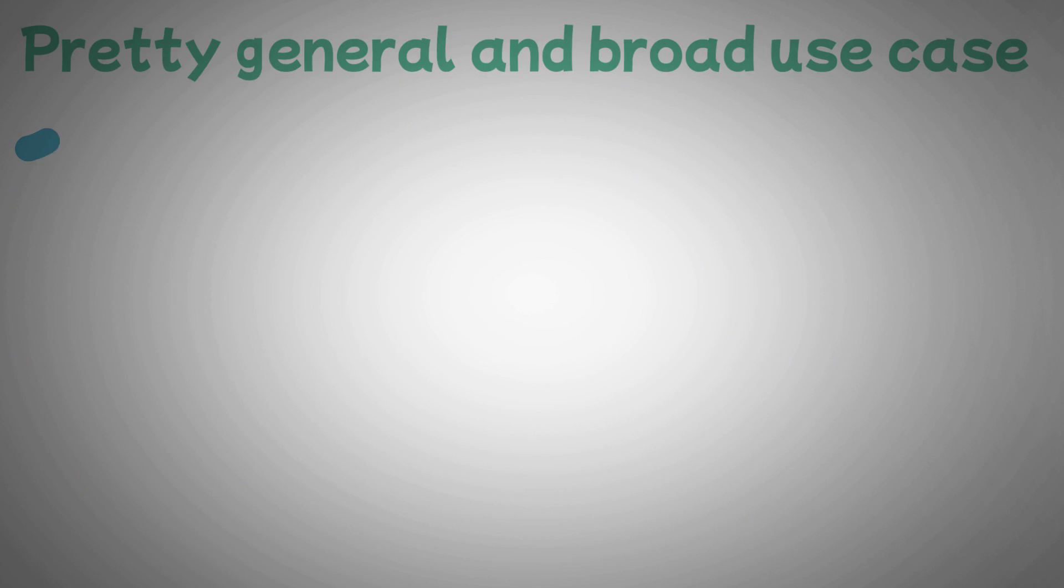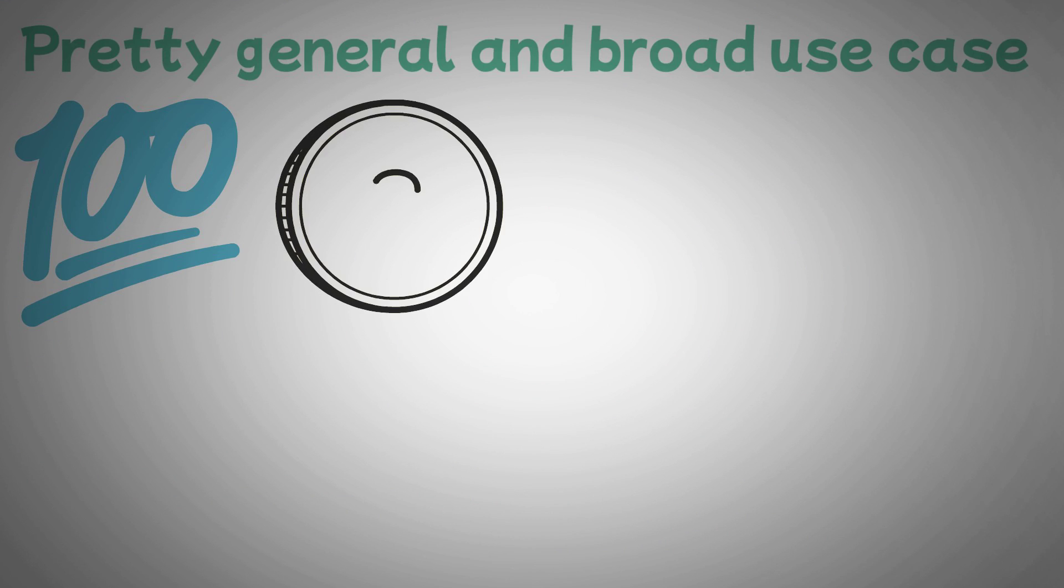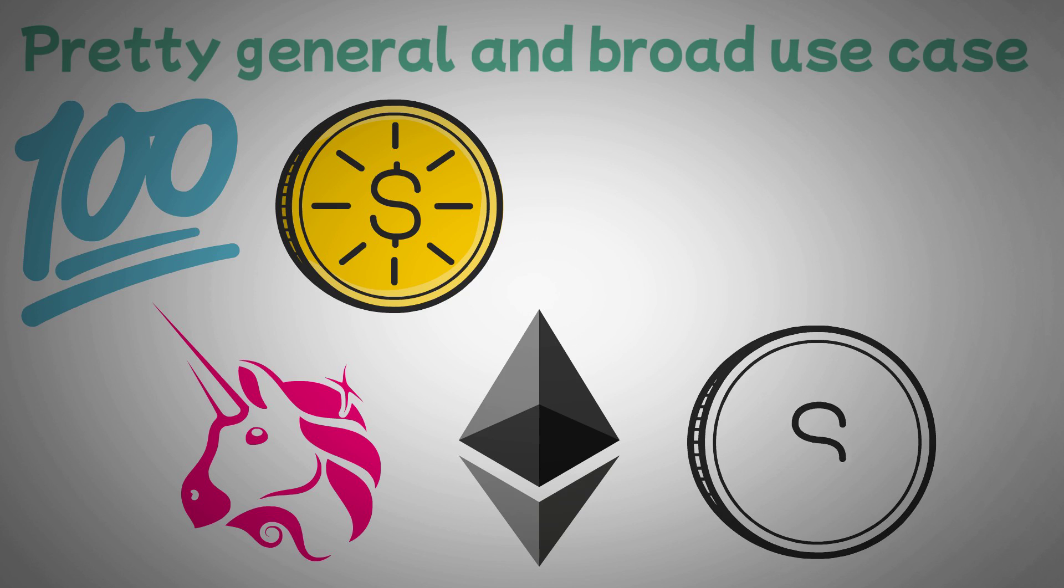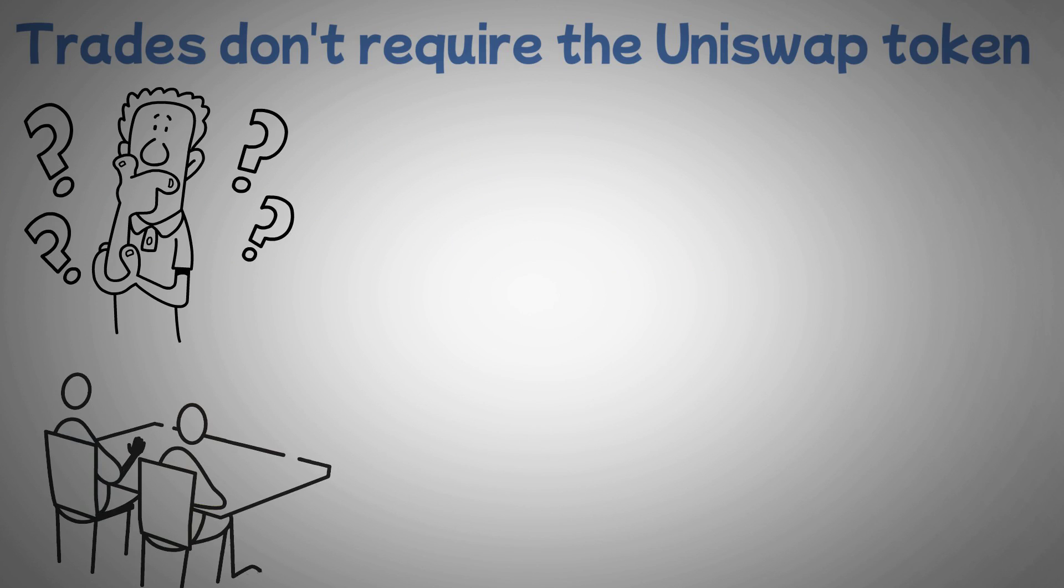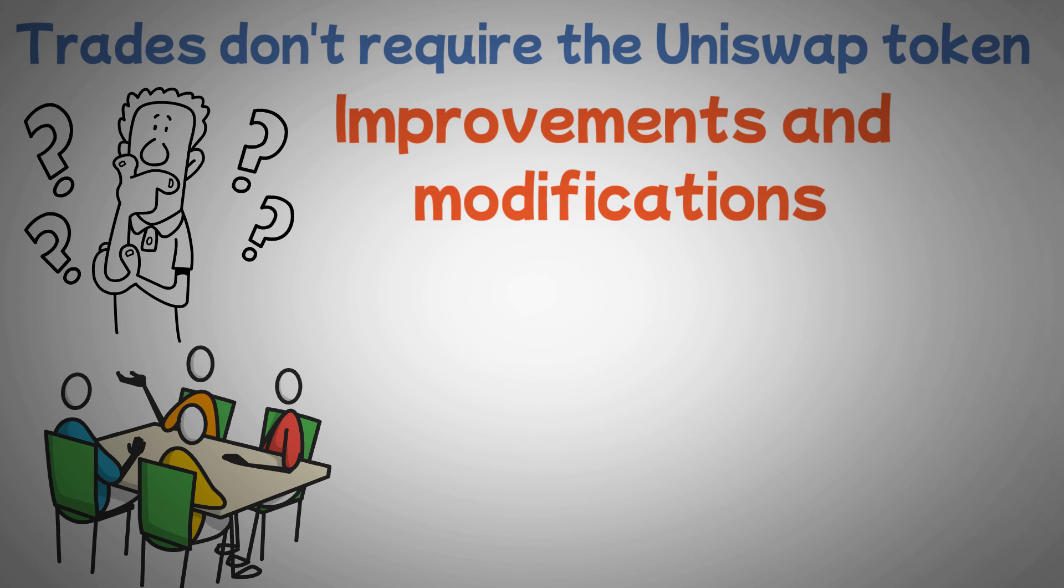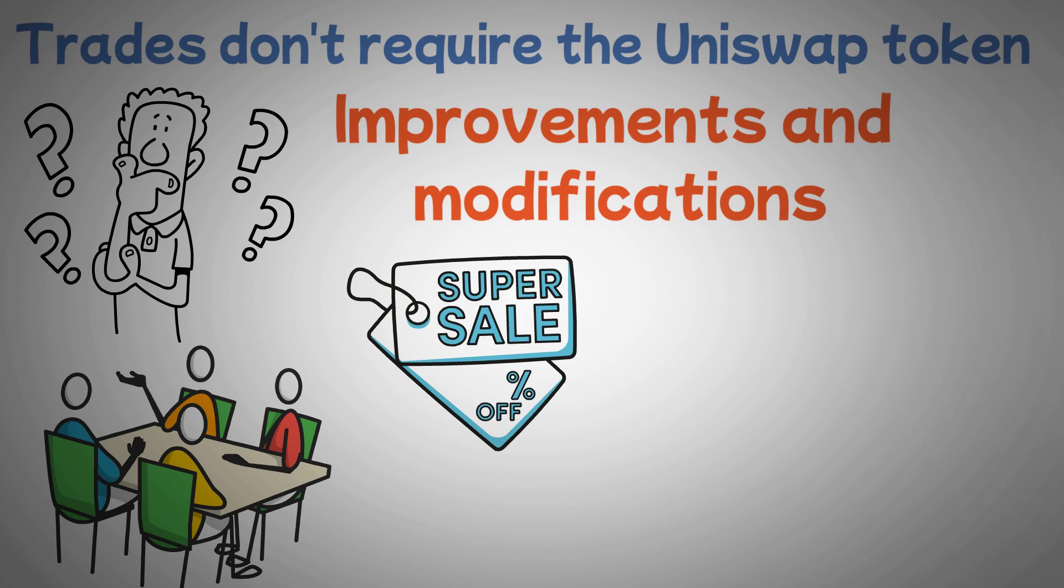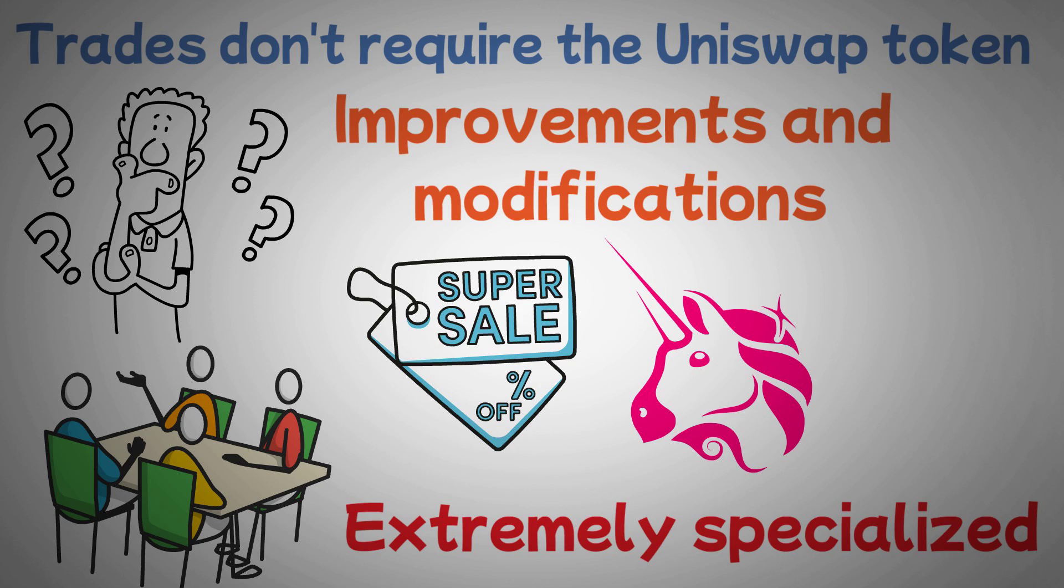The most well-known decentralized cryptocurrency exchange now has a token called Uniswap. You can anonymously exchange one kind of Ethereum token for another on the Uniswap exchange, which is run by an independent organization. It is therefore decentralized. However, those trades don't require the Uniswap token. What then is it even used for? Owners of the Uniswap token can vote on improvements and modifications made to the exchange in question, and they might also be eligible for discounts when exchanging other tokens on the platform. The Uniswap token's use case in this instance is extremely specialized and limited to the decentralized exchange platform.